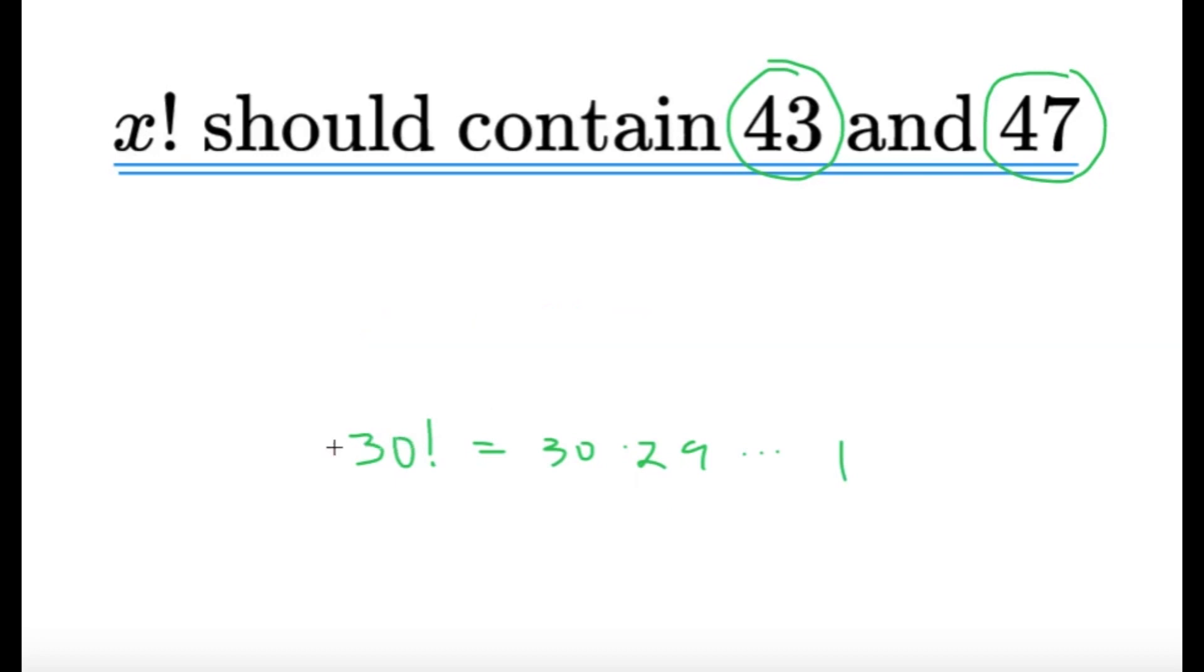So, well, actually, from this, we can already get the answer, and the answer for x must be at least 47. Because, for example, if x was 47 factorial, then obviously, if I expand 47 factorial, I'll get 47 times 46, and so on until 1. And, well, somewhere here, we're going to get a 43. And that's essentially it.